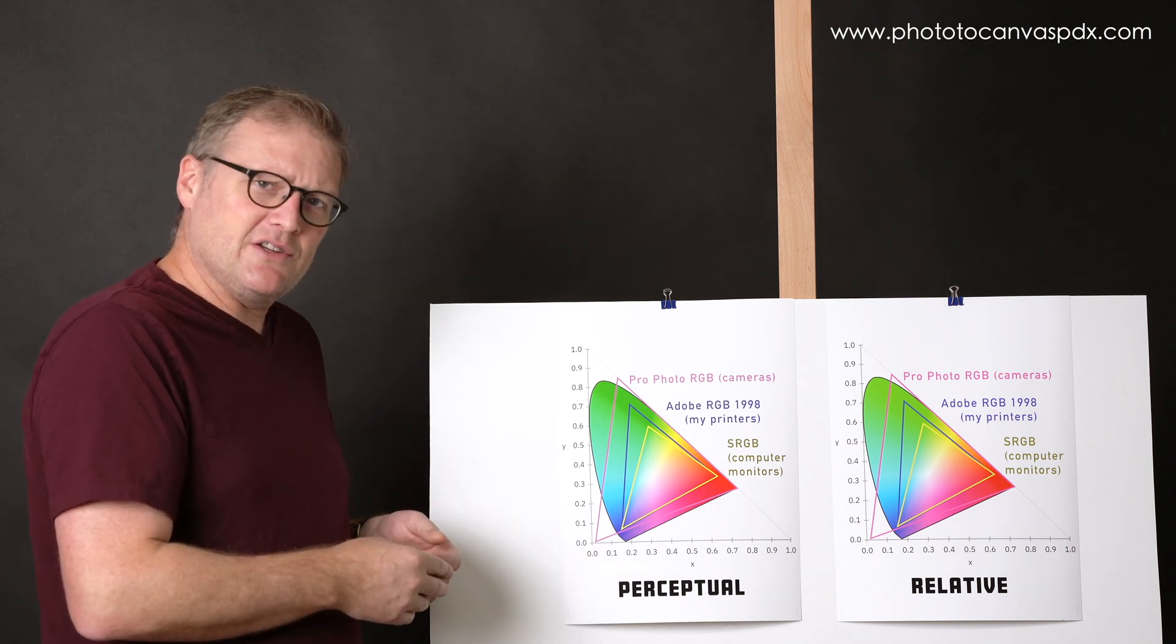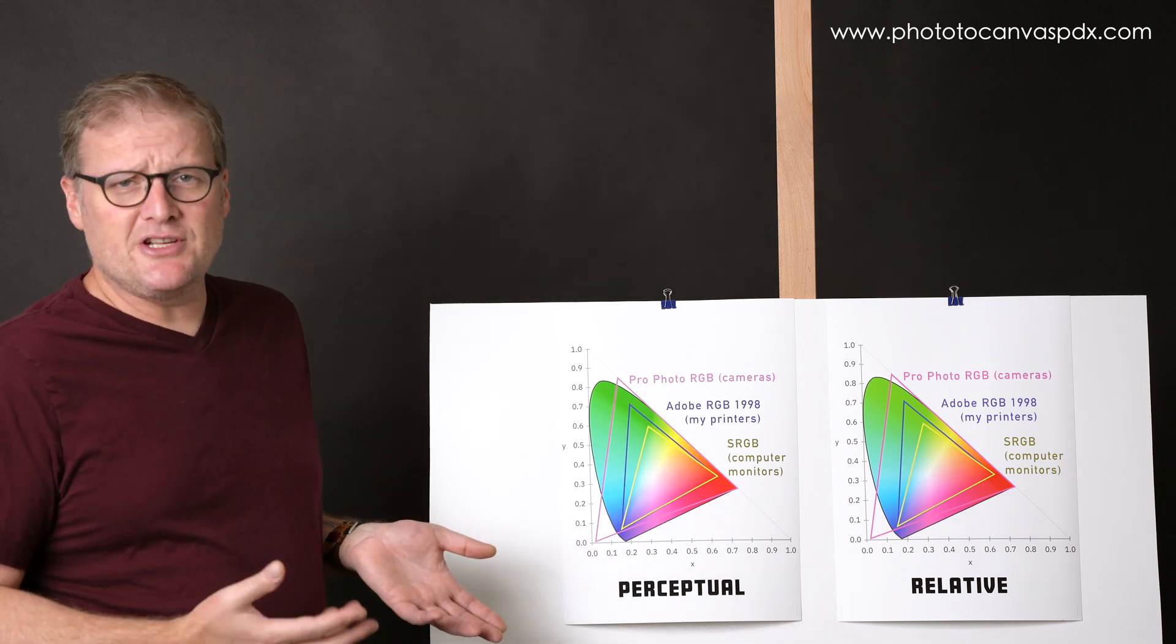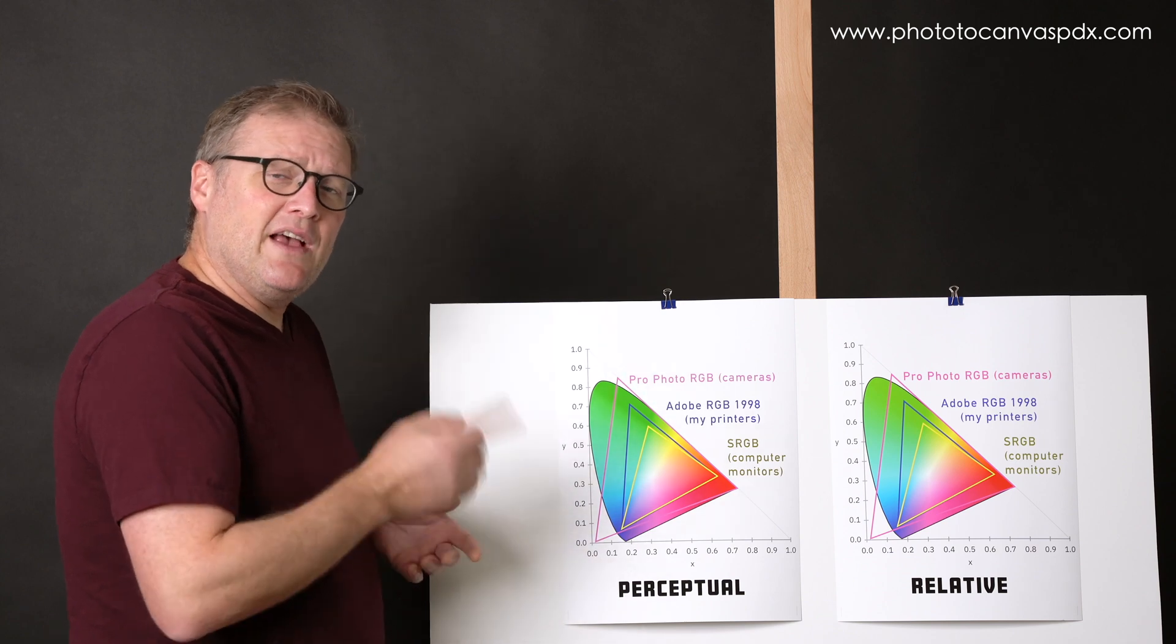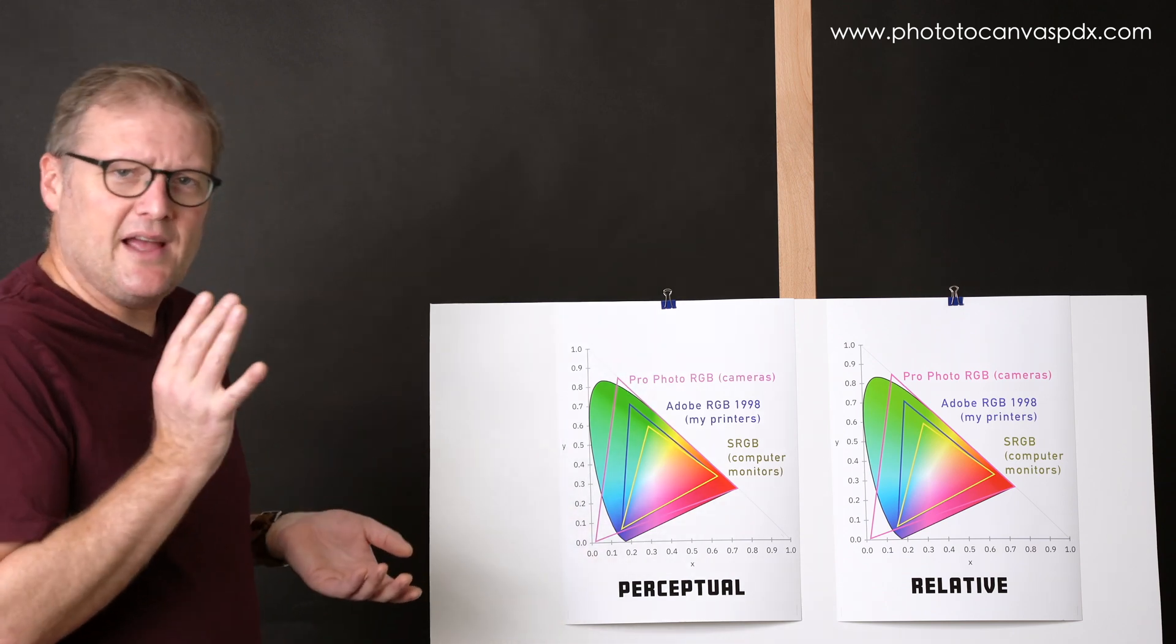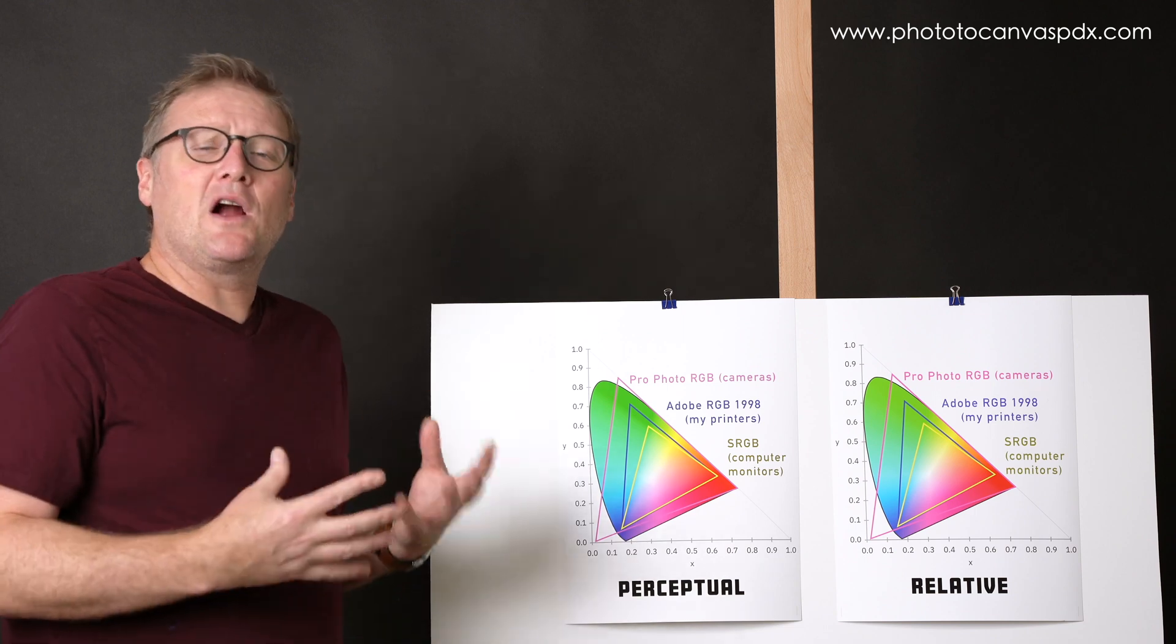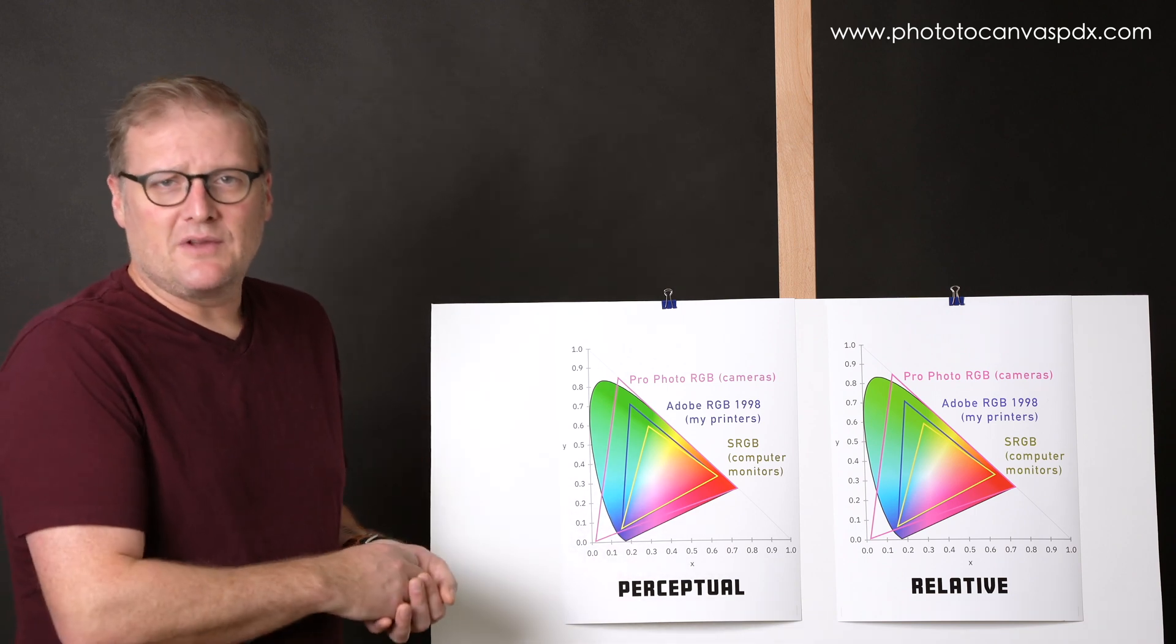Beside me, I have two color gamut charts. These are printed in Adobe RGB, and each chart shows sRGB, Adobe RGB, and ProPhoto RGB.